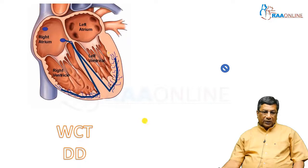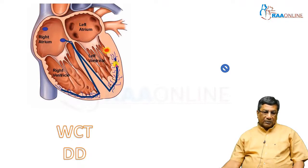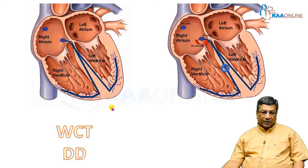Wide QRS complex tachycardia — the commonest cause is ventricular tachycardia. Here, a ventricular ectopic pacemaker is firing rapidly. The impulse from the ventricular ectopic pacemaker has to travel through the muscle to depolarize all other areas of the ventricle. Naturally, ventricular tachycardia will have wide QRS.